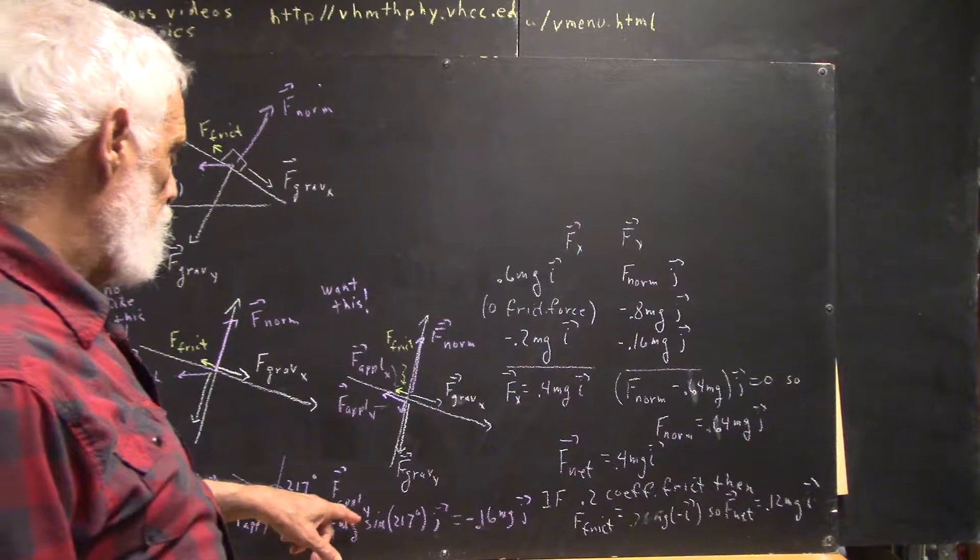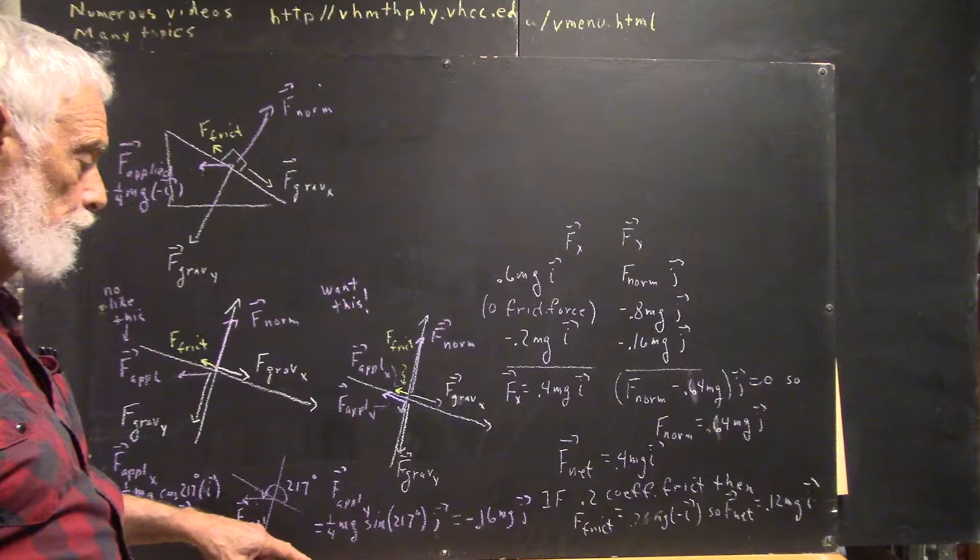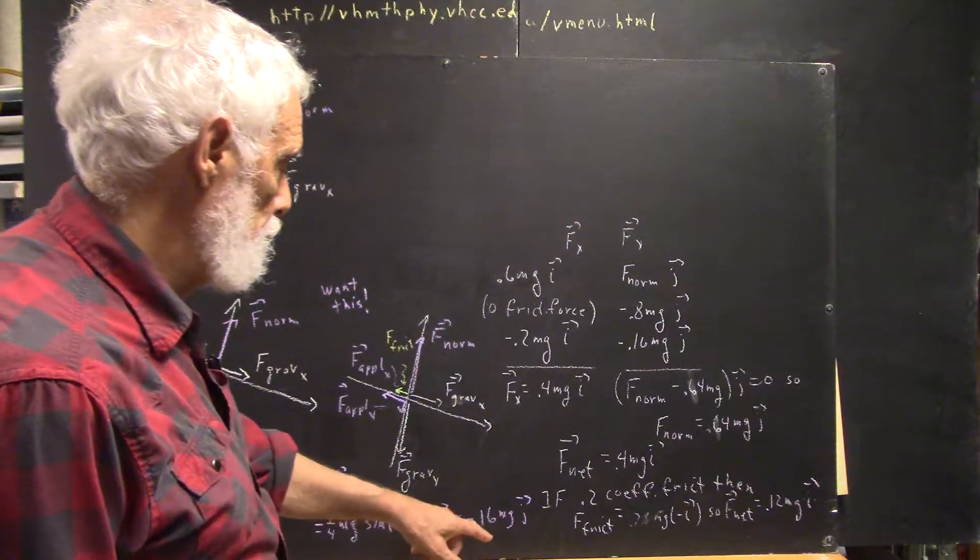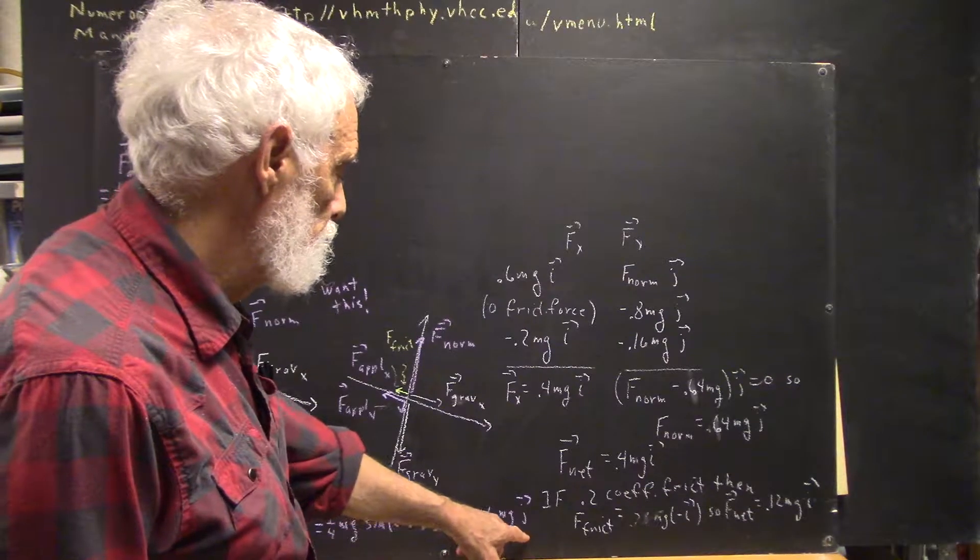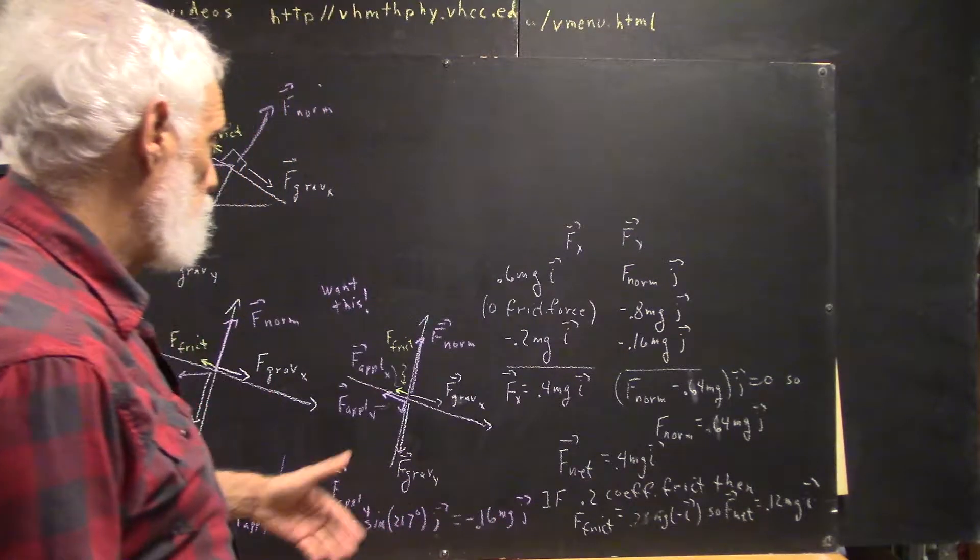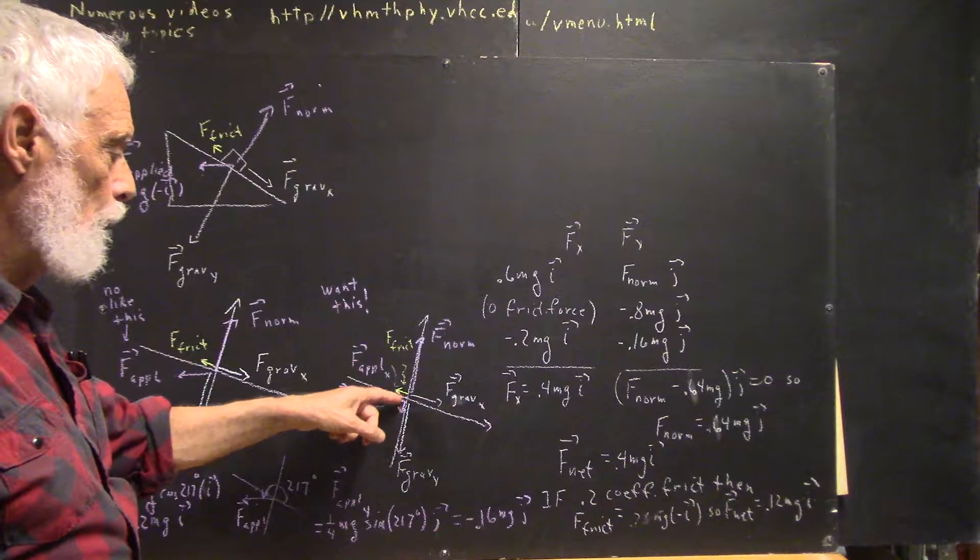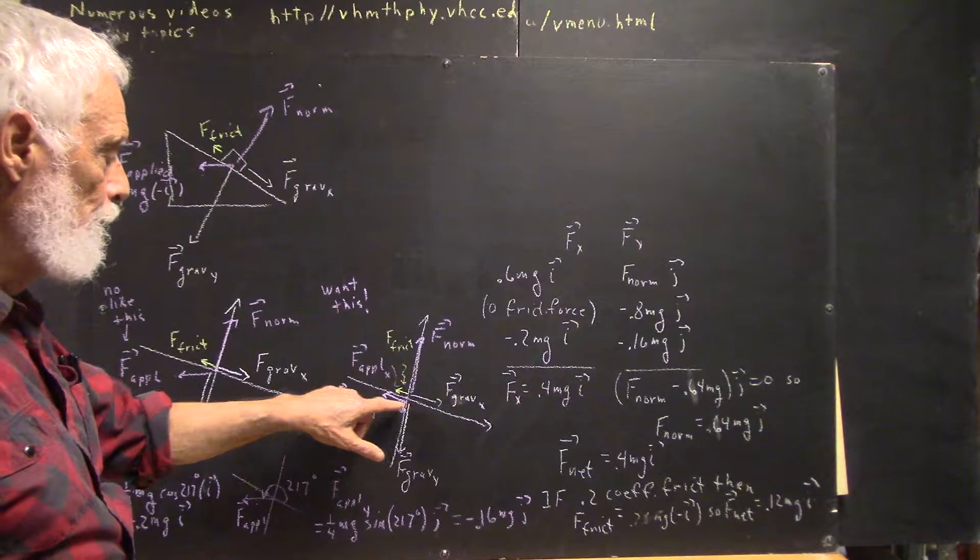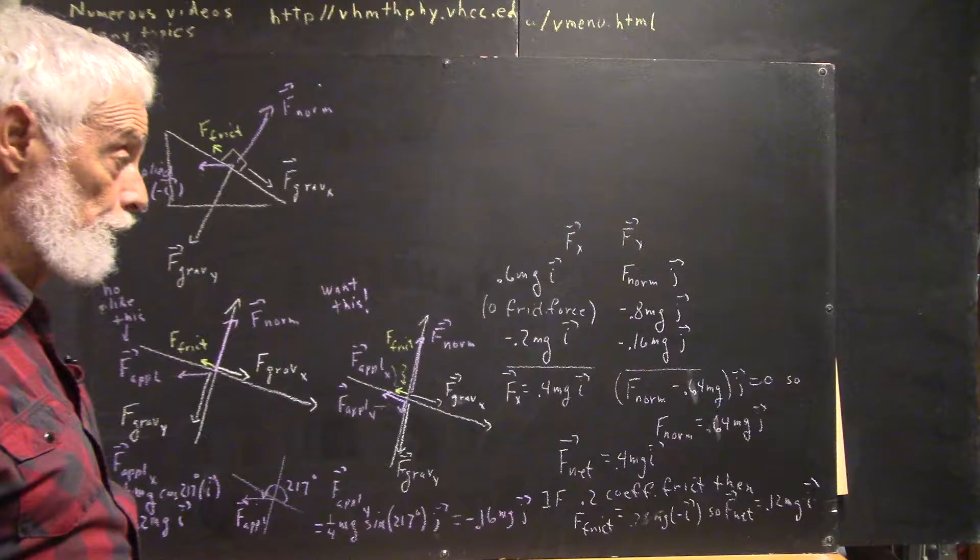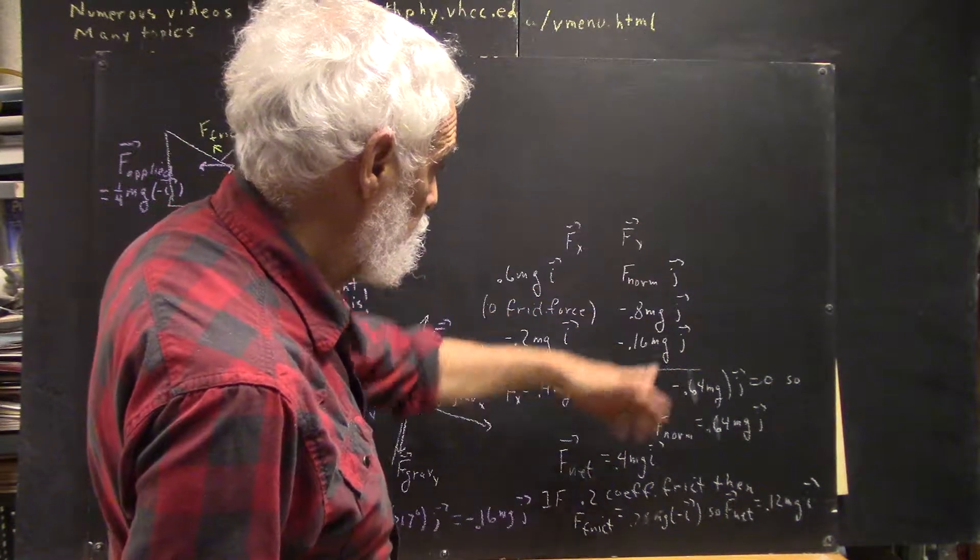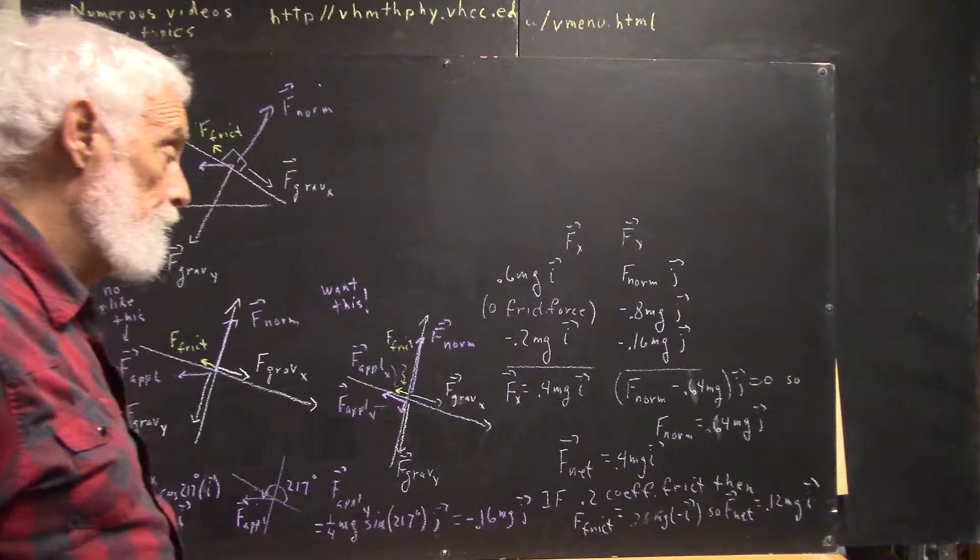And then the y-component of our applied force is the same thing, but with the sine of 217 degrees, and that's negative 0.16 mg times the j-vector. So now we have the y-component of the applied force here, the x-component of the applied force here, and we can proceed to just list our forces in the x and the y-directions.